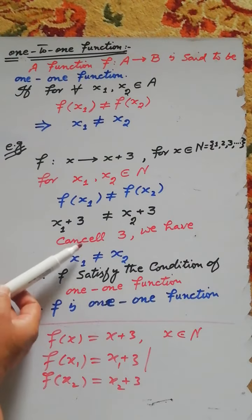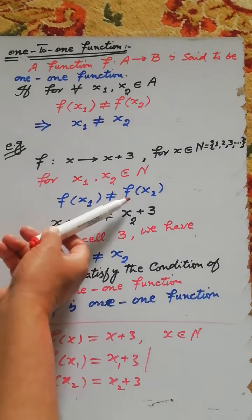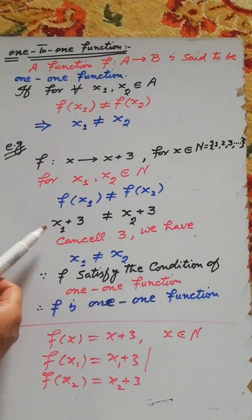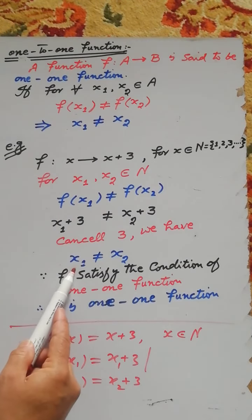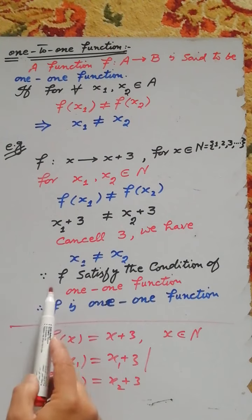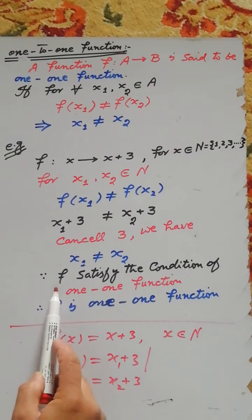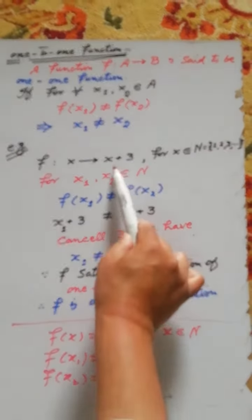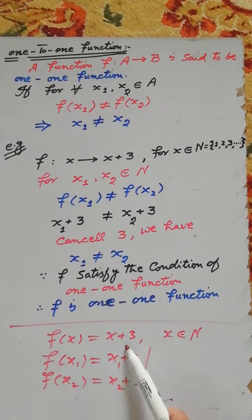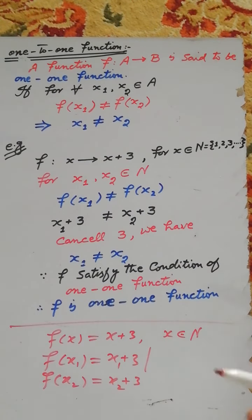That is, f(x1) is not equal to f(x2) and it is true that x1 is not equal to x2, which means the function f satisfies the condition of a one-to-one function. Therefore we can say that the given function f(x) = x + 3 is a one-to-one function on the domain set of natural numbers.